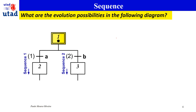Considering this example here, where we got an initial step 1 which is active, what are the evolution possibilities in this diagram? It depends on the transition conditions. Because transition 1 and transition 2 are both enabled at this instant, if you got a situation where A is true and B is false, transition 1 is going to be cleared and this token passes to step 2. In this case, the selection of sequence 1 was done.